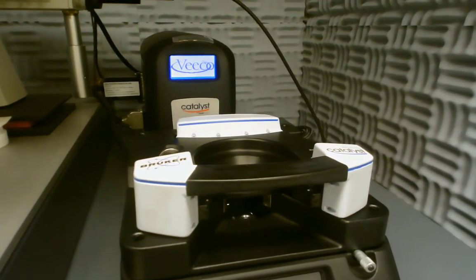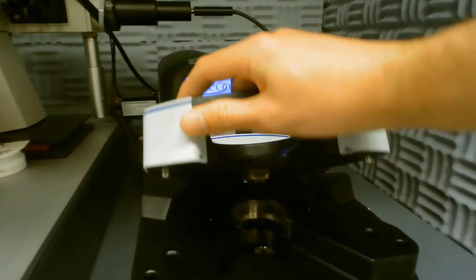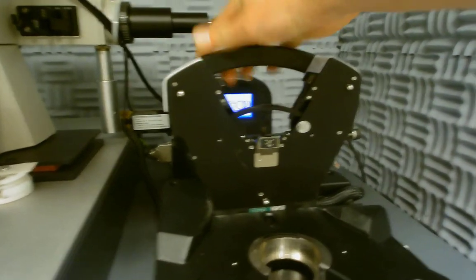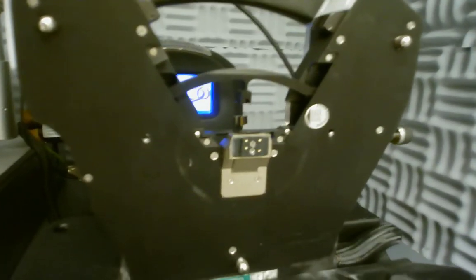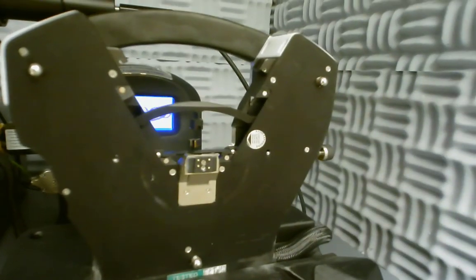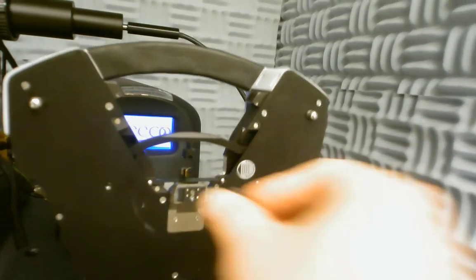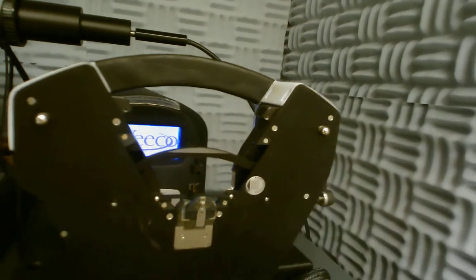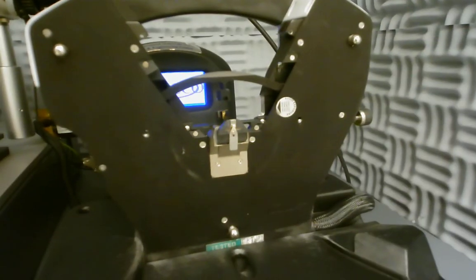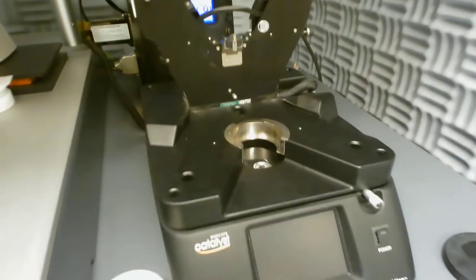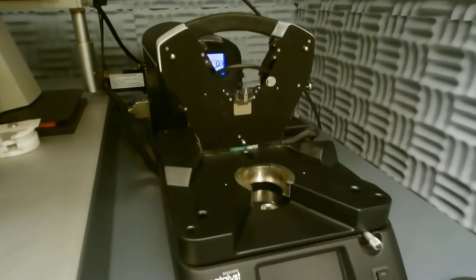This is the cradle that holds the tip. So we tilt it back and the tip holder is mounted here like so. It slides on and is held by a dovetail joint. And then we will use this camera down below to help align the laser and the tip.